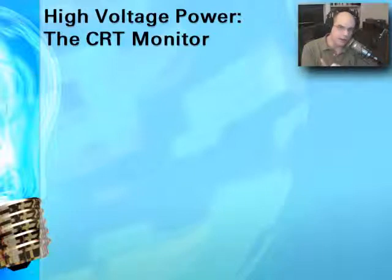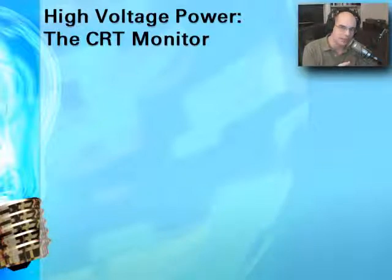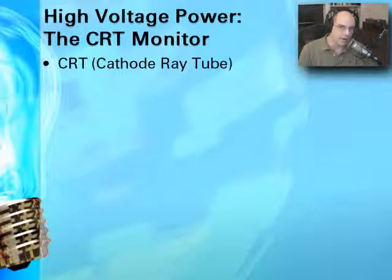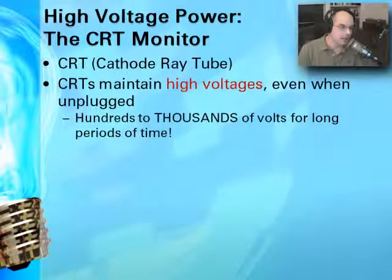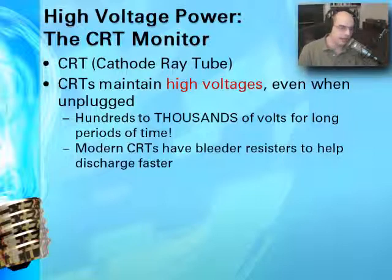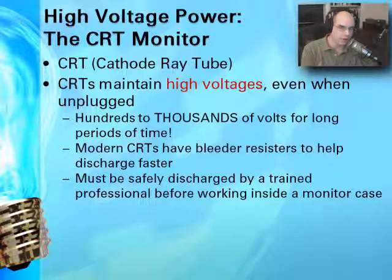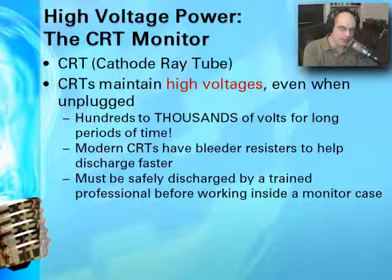Another source of very high power is your monitor, if you have a CRT — a cathode ray tube. This does not apply completely to LCD monitors. The power inside a CRT monitor involves very high voltages, even when unplugged — even thousands of volts can remain inside older CRTs. Some modern CRT monitors have bleeder resistors so they discharge internally faster when turned off. Whether older or newer, when you open a CRT monitor, you want to be sure to discharge the stored power. If you've never done that before, bring in someone professionally trained.